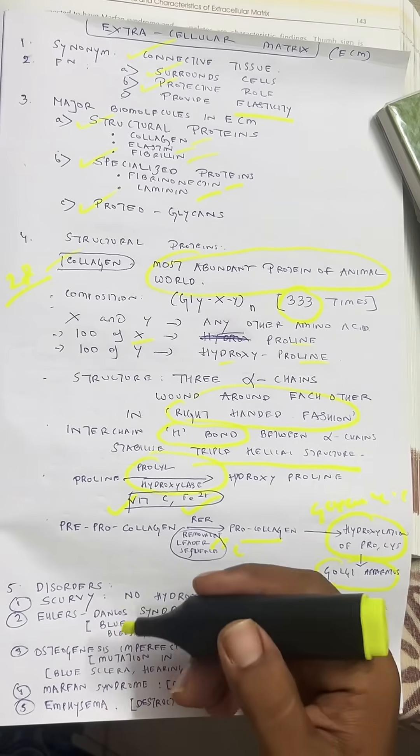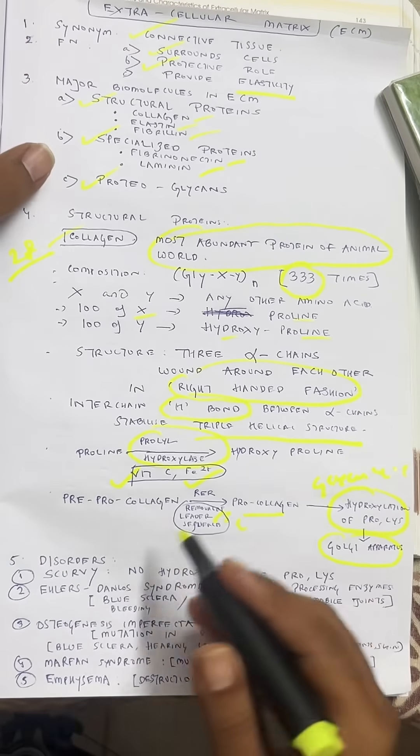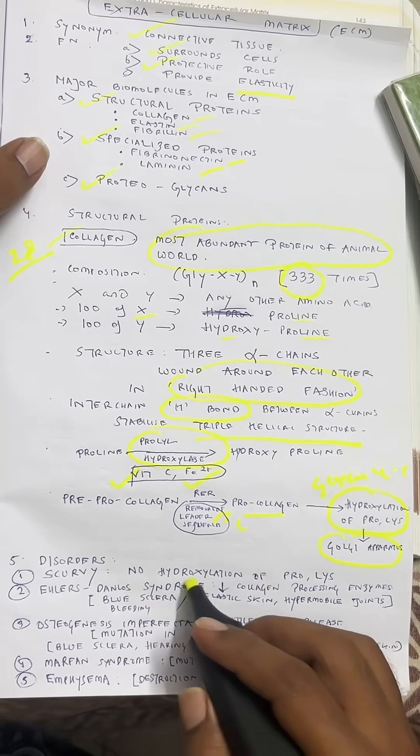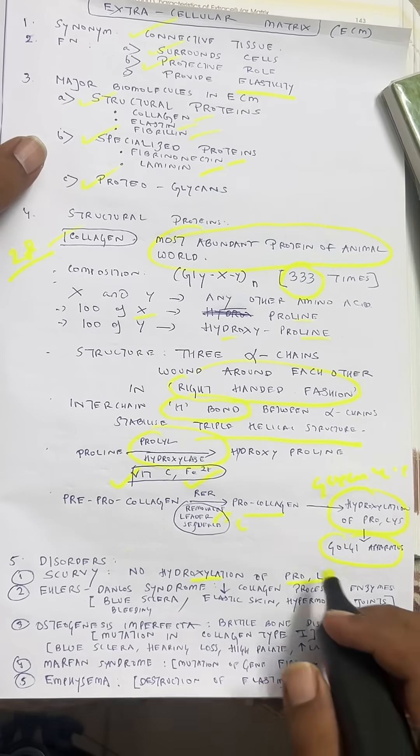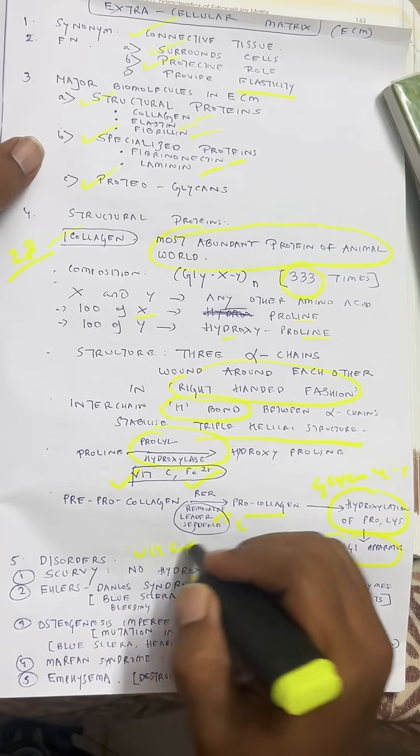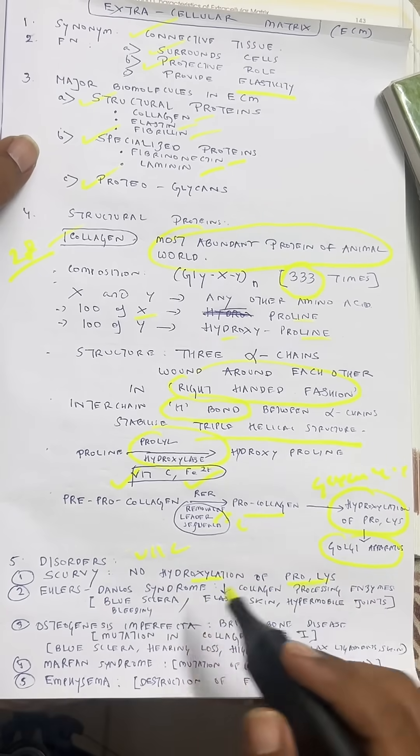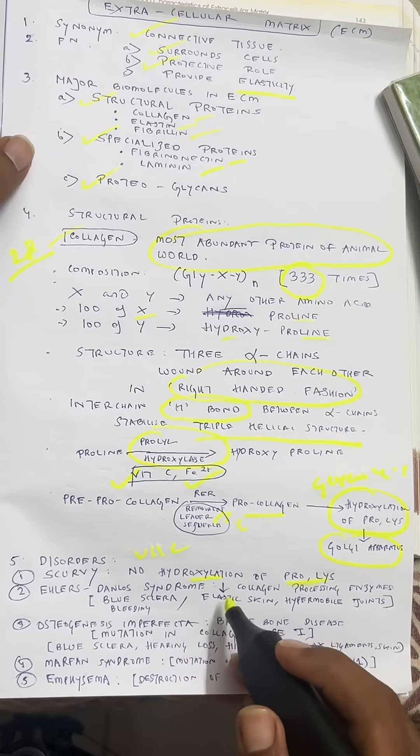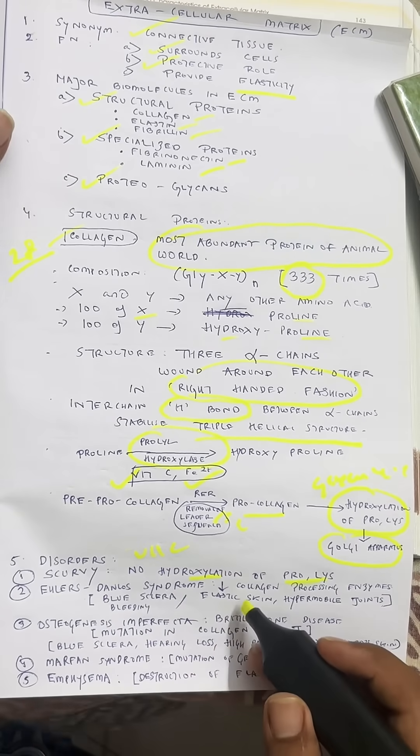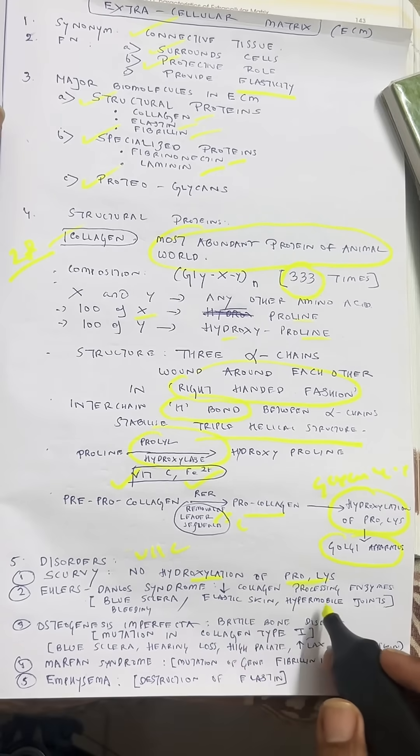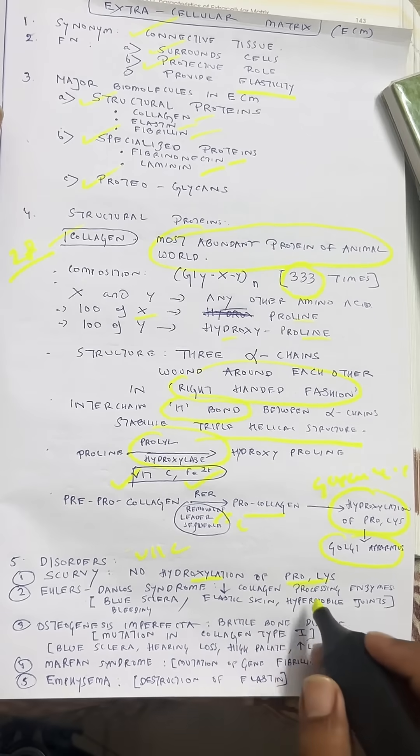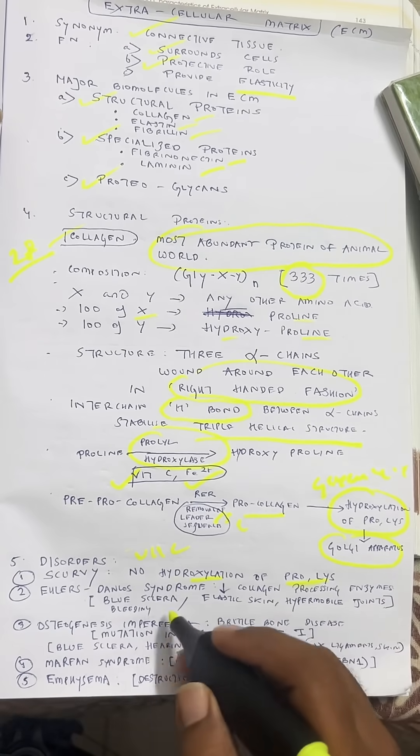Disorders are mainly related to collagen metabolism. Scurvy: no hydroxylation of proline and lysine due to deficiency of vitamin C. Ehlers-Danlos syndrome: there are 6 to 7 types, most important is the classical type due to mutation in type 1 and type 5 collagen, causing deficiency of collagen processing enzymes.